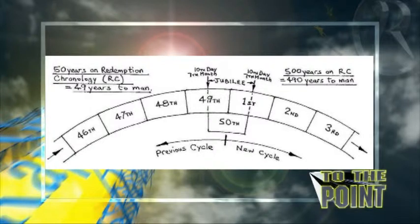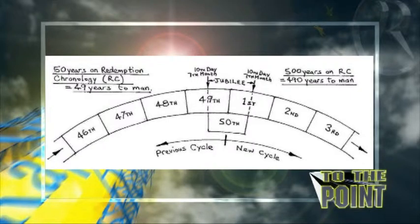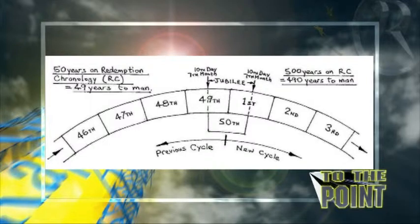Why does it happen on the Day of Atonement? This 50th year isn't part of the Sabbath cycles, because if it were, it would disrupt the seven Sabbath cycles — there's a continuous series. So the 50th year starts halfway through the 49th year and goes halfway through the first year of the next cycle. God counts a Jubilee cycle as 50 years, but to man it's a cycle of 49 years. That's going to be vital later on.